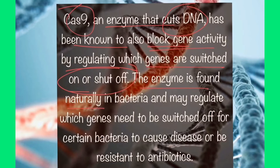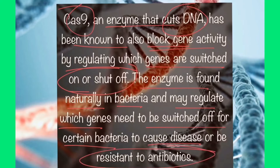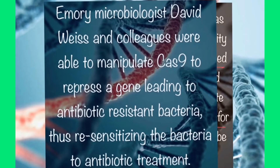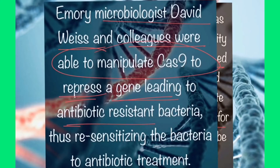The enzyme found naturally in bacteria may regulate gene switching, which can switch off certain bacteria causing disease or resistance. It was found that these Cas9 genes have the capability in some bacteria to either switch on the gene resistance mechanism or switch off them. Scientists known as Emory microbiologist David Wiss and colleagues were able to manipulate these Cas9 genes to repress the genes leading to antibiotic resistance.